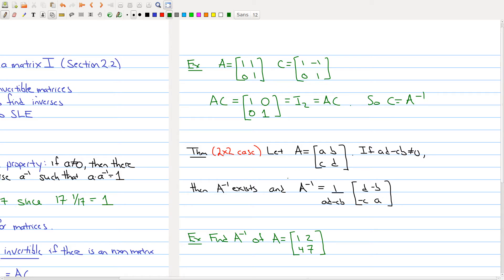The two by two case is as follows. Suppose you're given a two by two matrix and you form this number ad minus cb from this matrix. You take this diagonal, that's the ad, multiply them together and subtract the anti-diagonal. This number is called the determinant of A. We're going to talk about it more fully when we get to chapter three.